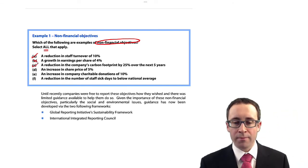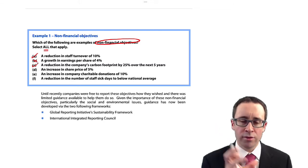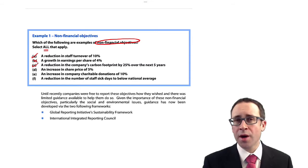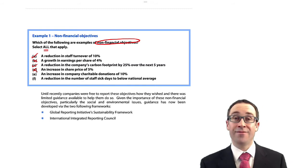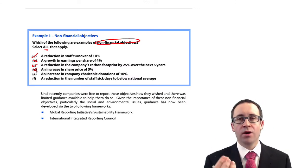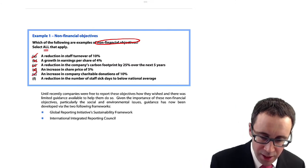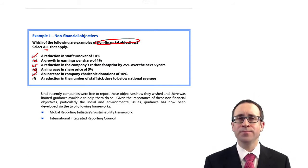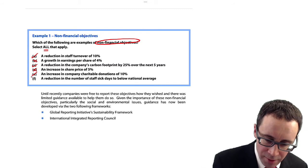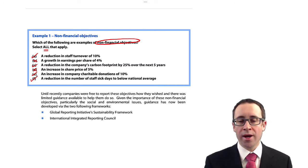A reduction in the company's carbon footprint by 25% over the next five years — that's a big focus for businesses now, especially with emissions targets being set by governments around the world. That is a natural non-financial objective, thinking about the environment. An increase in share price? No — that is a financial objective, thinking about how the business can grow with regard to its value. An increase in company charitable donations — that's a non-financial objective, more of a social and relationship aspect. A reduction in the number of staff sick days to below the national average — that's trying to reduce sick days, maybe by improving working conditions, so that's a human non-financial objective.